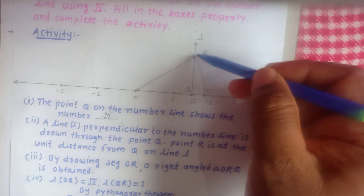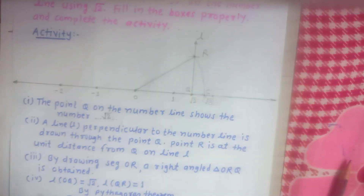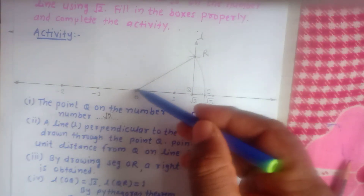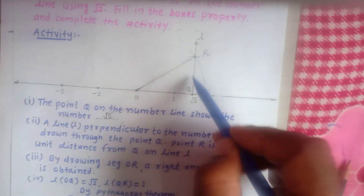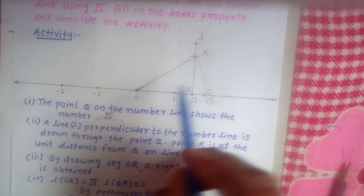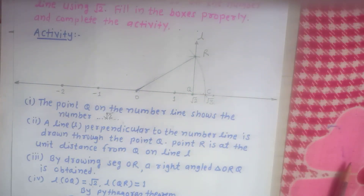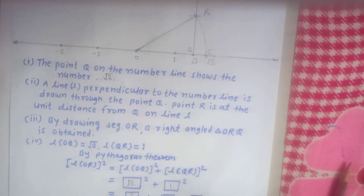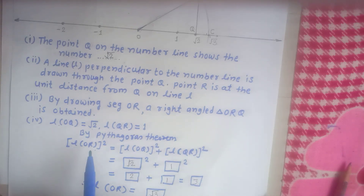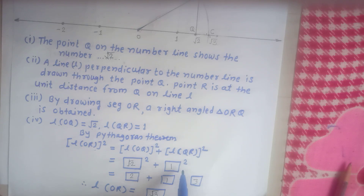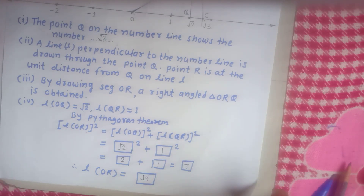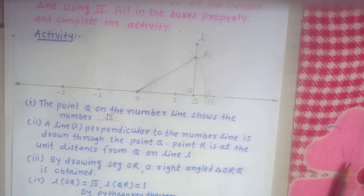Point R is at a unit distance from point Q on the perpendicular line. By drawing segment OR, right angled triangle ORQ is obtained. Length OQ is root 2 and length QR is unit distance 1. Therefore, by using the Pythagorean theorem, length OR squared equals length OQ squared plus length QR squared. Root 2 squared is 2, plus 1 squared is 1, giving 2 plus 1 equals 3. Therefore, length OR equals root 3.